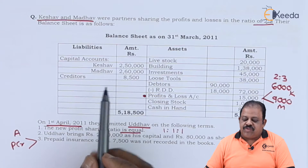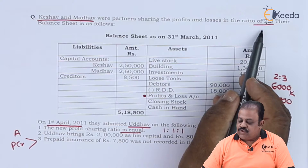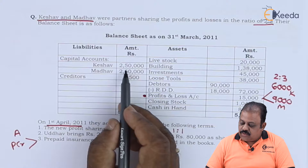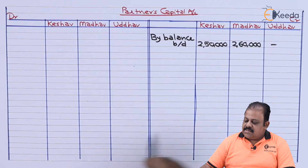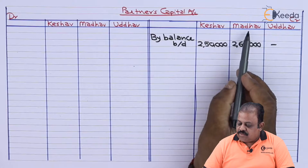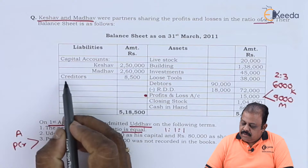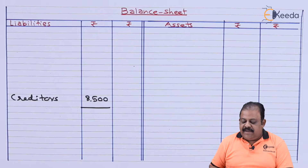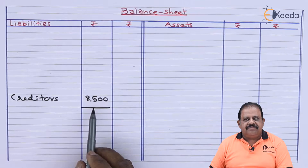Let us start posting. Keshav and Madhav were partners sharing profits and losses in the ratio of 2:3. Capital of Keshav is 1 lakh 50,000 and Madhav is 1 lakh 60,000 — these will be transferred to their capital accounts on the credit side. Creditors are 8,500 on the liability side.